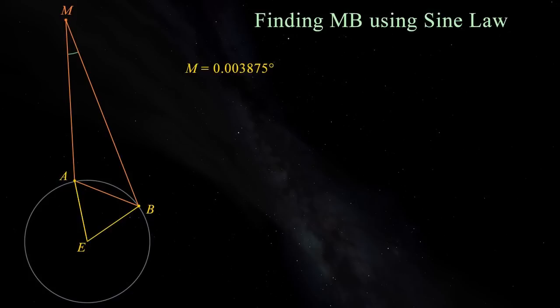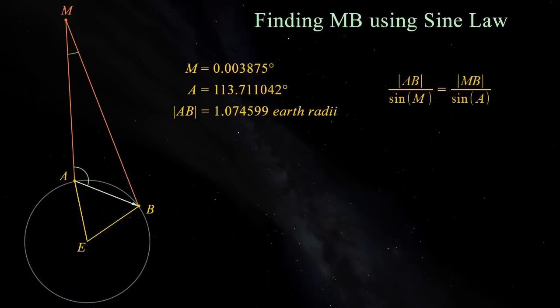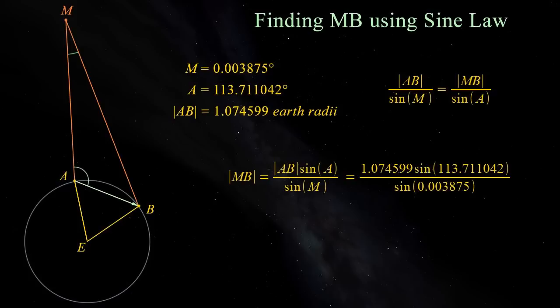We now have the angle M, the angle A and the length AB. We have everything we need to use the sine law to calculate BM. The sine law states that AB over sin M equals MB over sin A. Rearranging this, MB equals AB sin A over sin M. Plug in the numbers we've calculated, crunch them out, and we find that MB is 14,547.761 Earth radii.